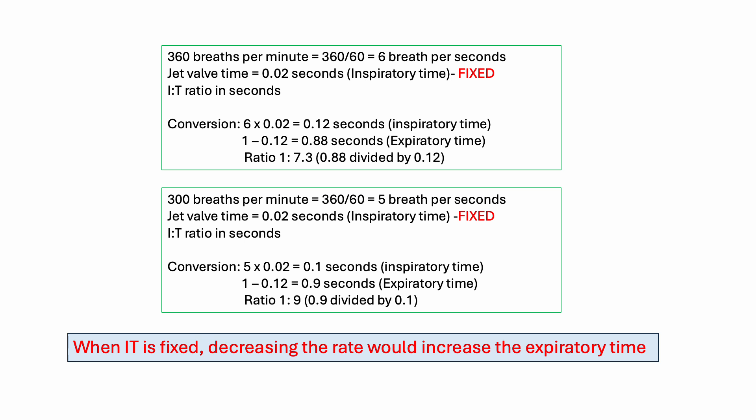The concept to remember is that in jet ventilation, the inspiratory time is fixed at 0.2 seconds. So if you decrease the rate, the expiratory time increases because the inspiratory time is fixed. When you decrease the rate, the expiratory time goes up to compensate.